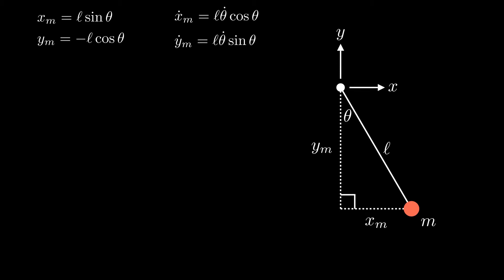Alright, now let's find the kinetic energy of our system. We see that our velocity vector has an x and a y component, which gives us the equation v squared equals x dot m squared plus y dot m squared.